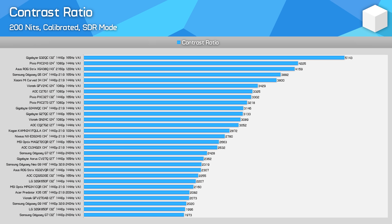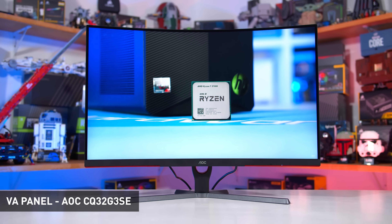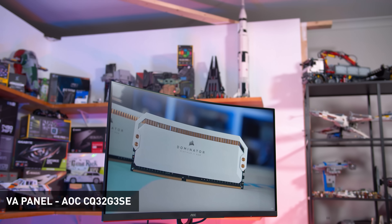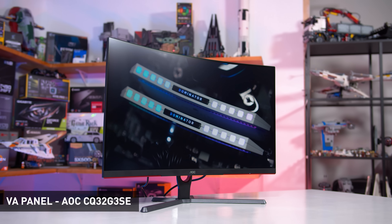If you really want an LCD to produce deep blacks, you'll have to go with a VA panel. The design is much more conducive to great contrast ratios, typically starting at 2000:1 — higher than even the best IPS alternatives. I've measured ratios up to 5000:1 for VAs, and some TVs push this even higher. On average we measured 2898:1 for VAs, meaning they are usually 2.5 to 3 times better at producing blacks than IPS or TN, which is great for night scenes in games or movies.